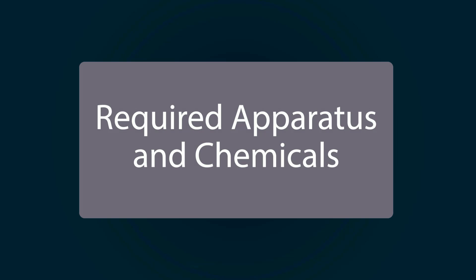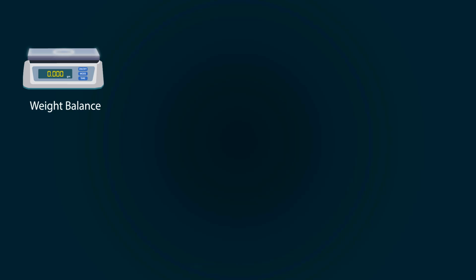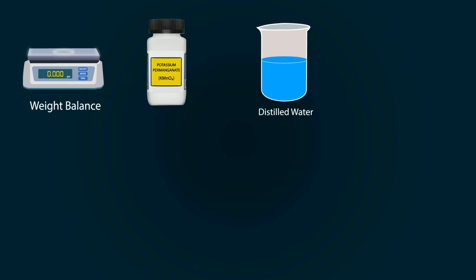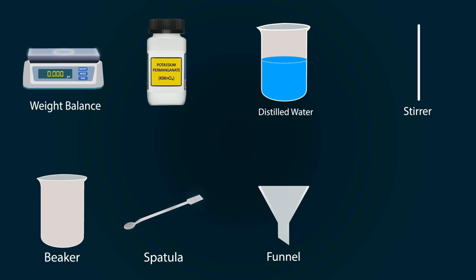Required apparatus and chemicals are: a weight balance, potassium permanganate, distilled water in a beaker, stirrer, empty beaker, spatula, funnel, and a volumetric flask of 1000 milliliters.